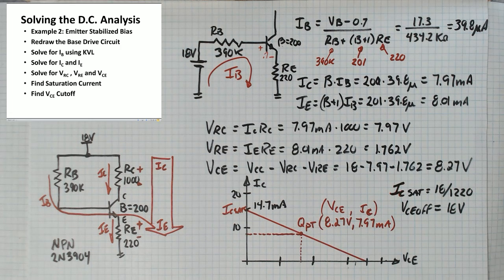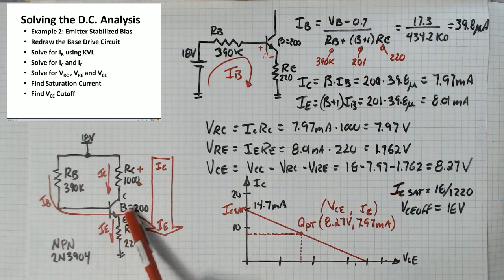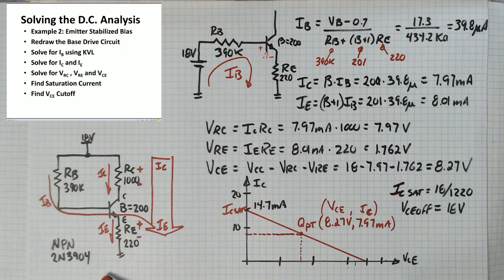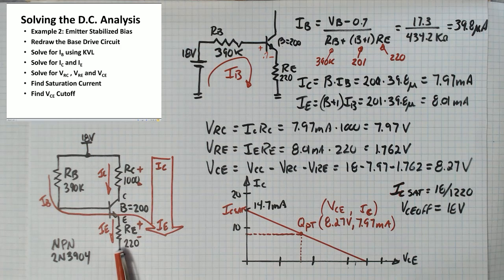VCE cutoff, that's the voltage across the transistor when it's off or when it's open. If I pull this transistor out of here and I measure the voltage between these two points, this is going to go to ground.